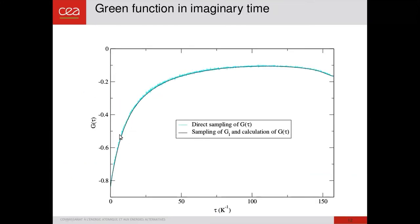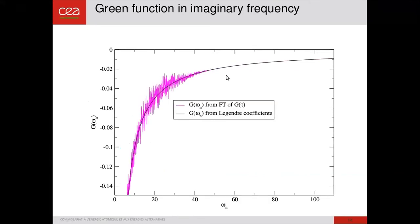And we have the following result for the Green function as a function of tau. You see that the noise has been cancelled by the filtering of high components of the polynomial expansion. And in imaginary frequency also, we have decreased the noise. So it's especially important as this noise impacts the quality of the self-energy, which is useful to compute several physical quantities such as the spectral function.